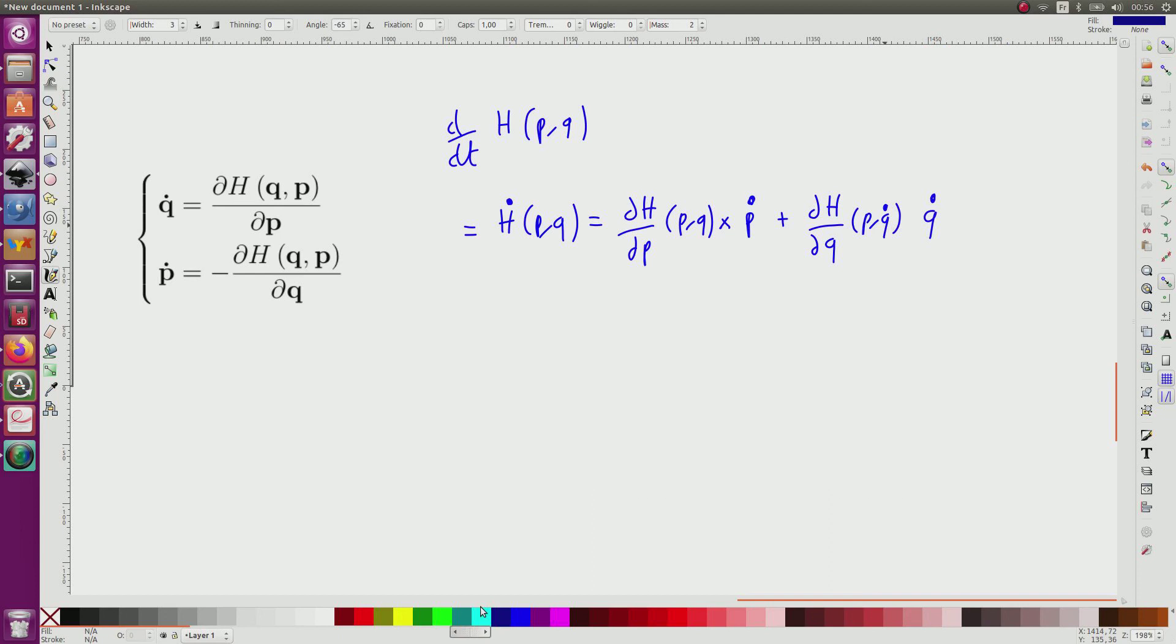Now due to this, I get here a q dot, and this corresponds to minus p dot. So this is equal to q dot times p dot minus p dot times q dot, which equals zero.